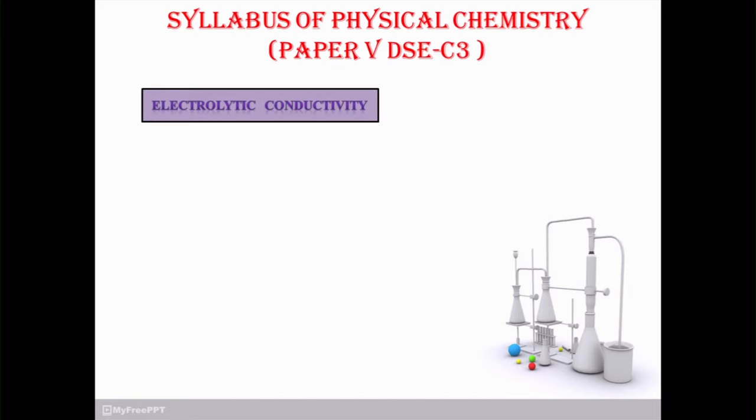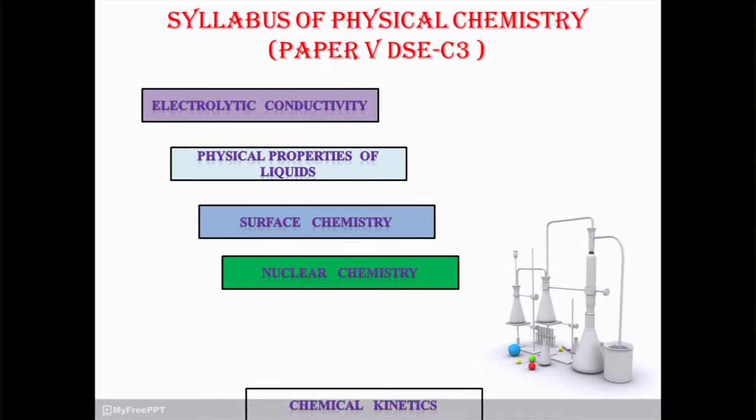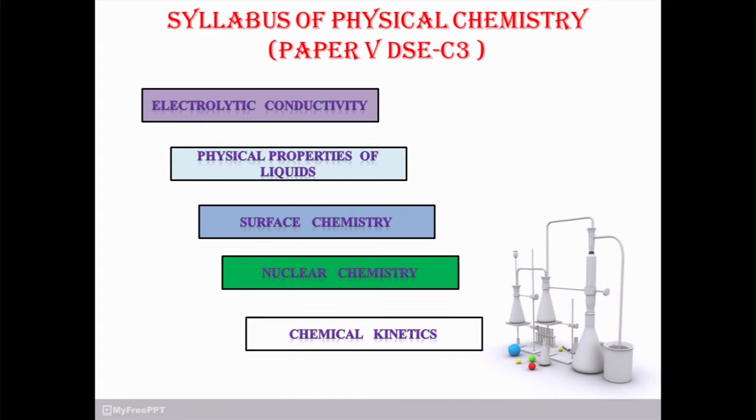Now go for the syllabus of physical chemistry, paper number 5 with the code DSE-C3. First chapter is electrolytic conductivity, second physical property of liquid, third chapter is surface chemistry, next chapter nuclear chemistry, and last chapter is chemical kinetics.